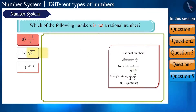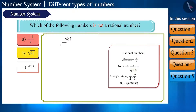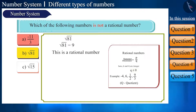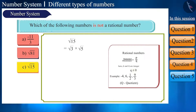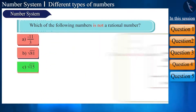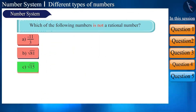The third option is the square root of 15, which is an irrational number. So the answer to which number is not rational is square root of 15. Now let's take another similar question: which of the given numbers is a rational number?